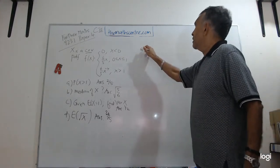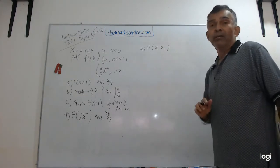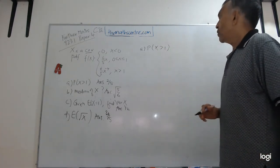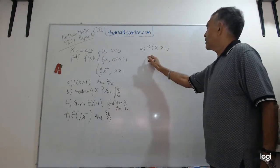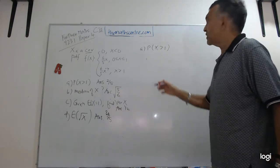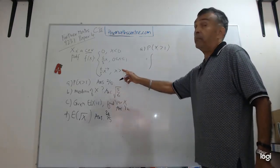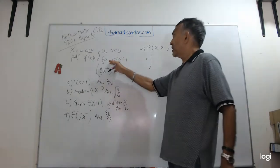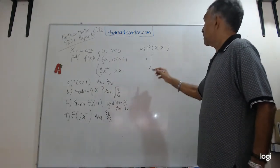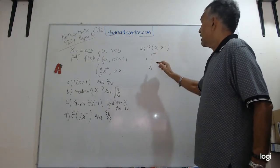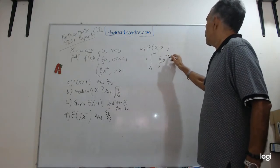And you are asked to find in part A, probability x greater than 1. So to find the probability x greater than 1, all you have to do is deal with the density function. The density function will be the correct part of this pdf. In this case, x bigger than 1. So we are going from 1 to infinity. The pdf involved will be 6 over 5 x to the power of minus 4 dx.